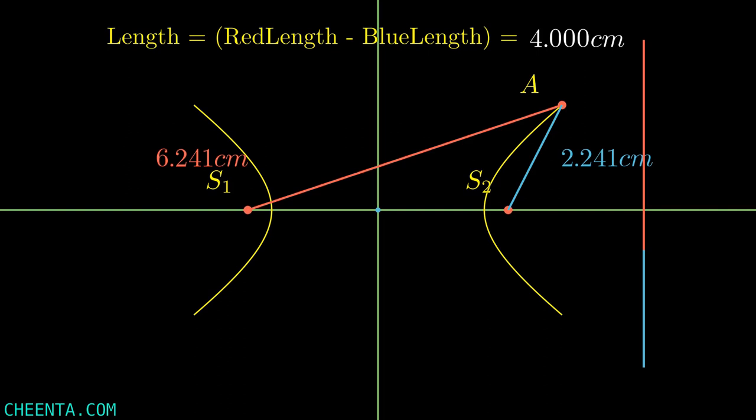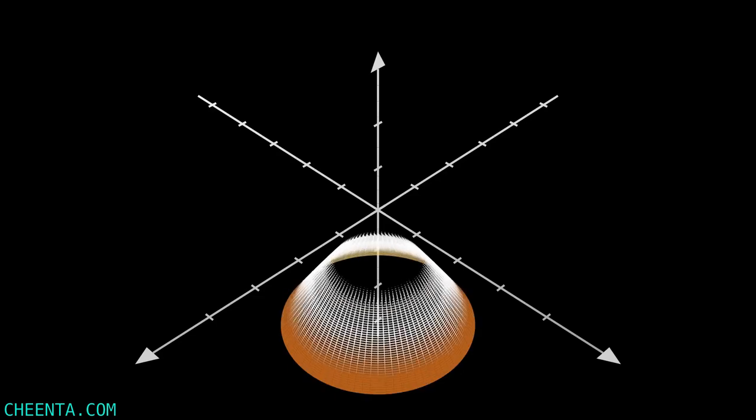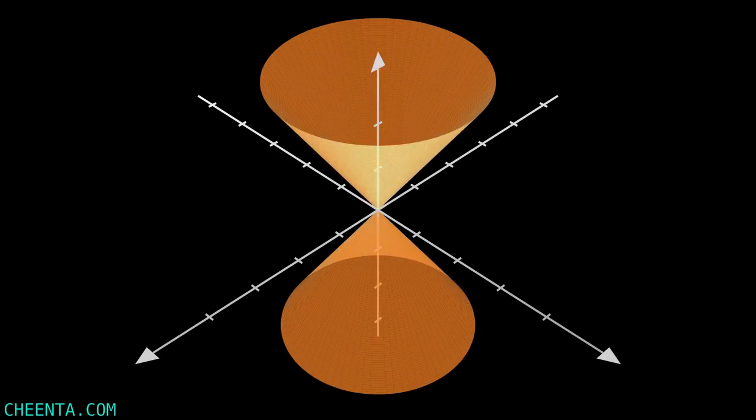Now we will see another definition of the hyperbola which uses a conic. To see this other definition, let's draw the axis and go to the 3D view. Now we will draw a double cone — that is a conic.